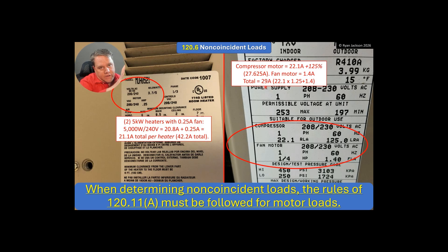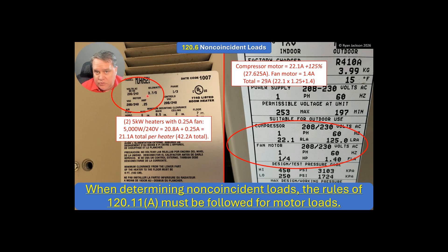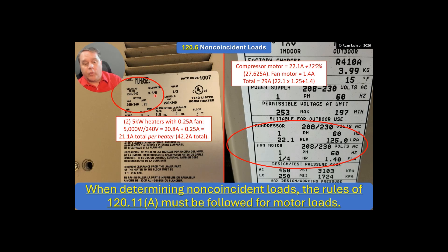Then I'm going to compare that against my heating. I've got two 5kW heaters. Let's say we're doing a feeder circuit right now, so I've got one air conditioner and two heaters. My two 5kW heaters are a resistance load, so 5,000 watts divided by 240 — nice and easy. And it has a very small motor, a quarter of an amp — like an eighth horsepower motor. When you go to 120.11(a), it says for a tiny little motor like that, eighth horsepower or less, just do it at 100%.